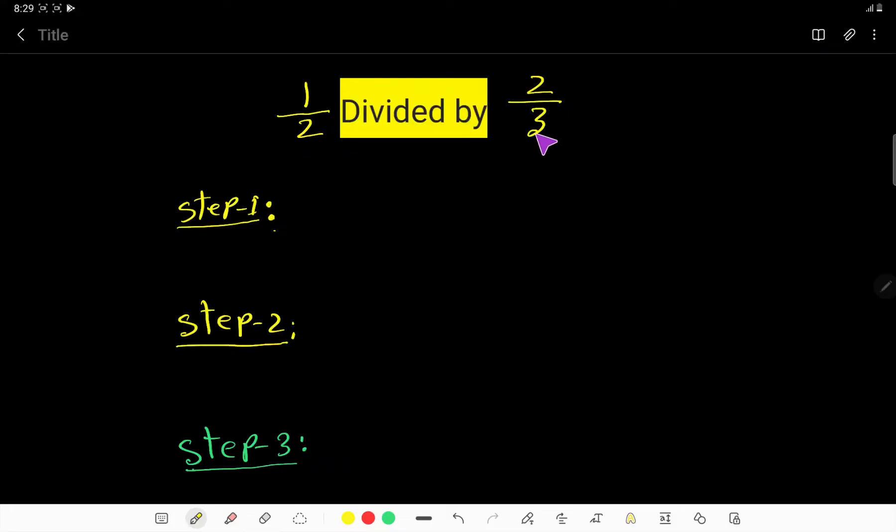Half divided by 2 over 3. In the first step, I will translate this expression. This 'divided by' means this division sign. And in the second step, I will change this division sign to a multiplication sign, and I will